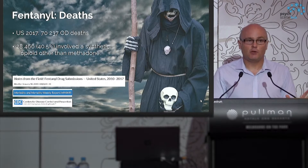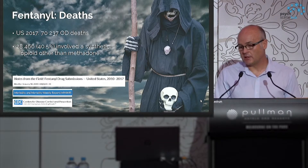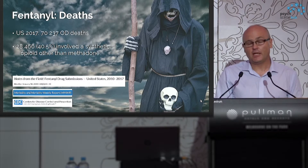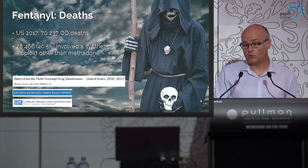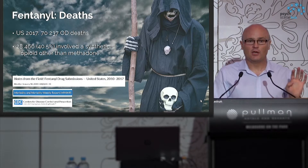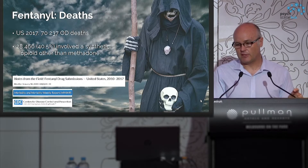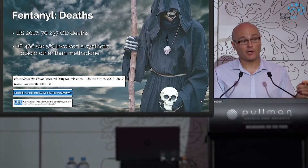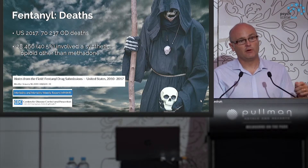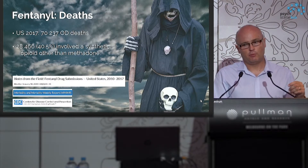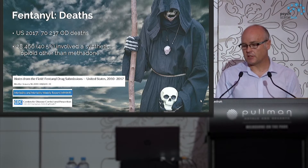In terms of the US as a whole, in 2017 there were over 70,000 overdose deaths, with nearly or over 40% due to a synthetic opioid other than methadone — meaning almost all of those deaths were due to fentanyl or a fentanyl analogue. This represents a major shift from the 90s when it was heroin, then prescription opioid analgesics, and now fentanyls lead, followed by prescription opioid analgesics and heroin.